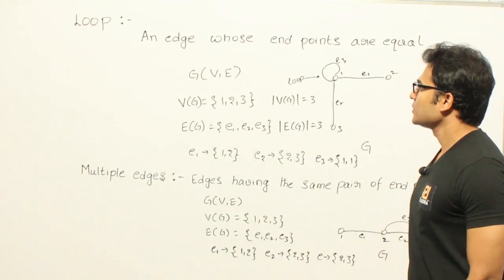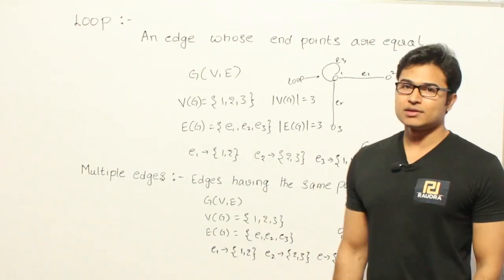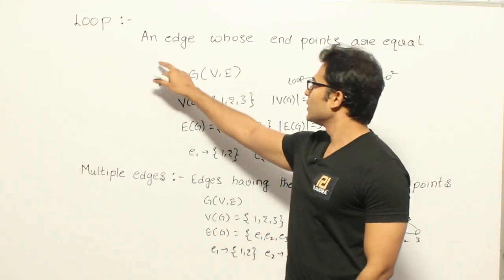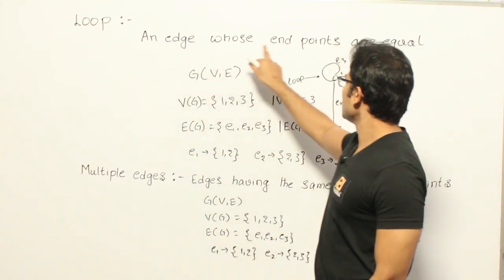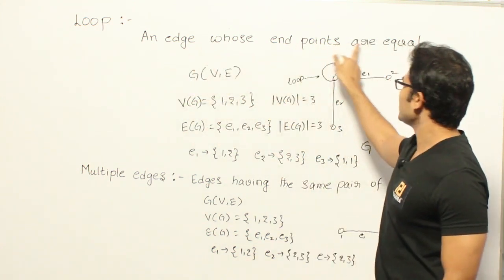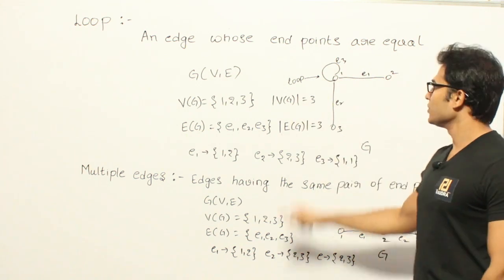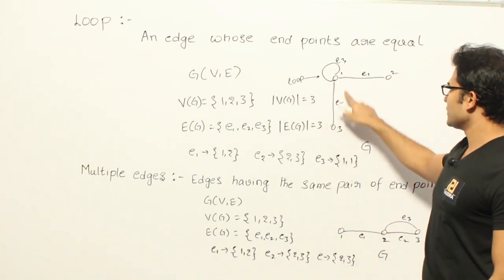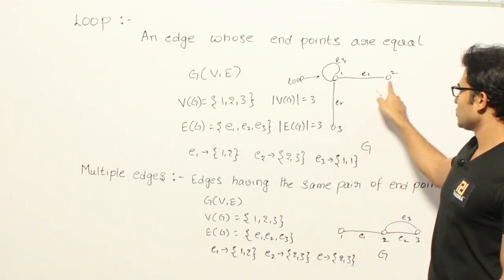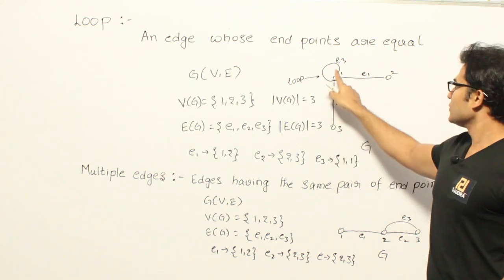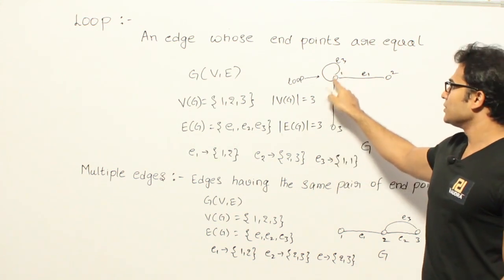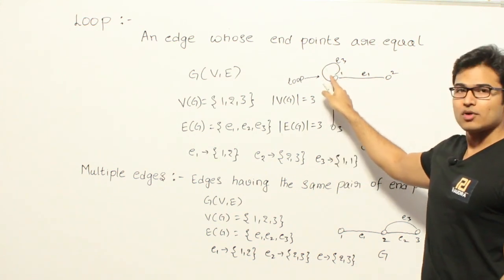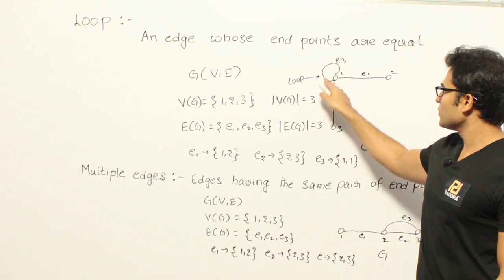Now there are special types of edges in a graph. One type is called a loop. An edge whose endpoints are equal is called a loop. For example, if there are 3 vertices 1, 2, and 3...